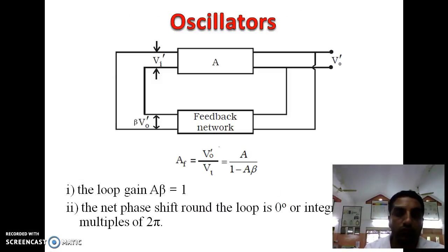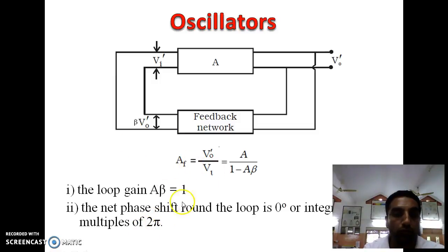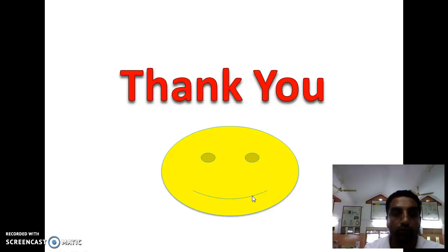Similarly, the transistor is used in different applications like the oscillator. An oscillator converts DC to AC. A transistor feedback amplifier becomes an oscillator only when two conditions are satisfied: the loop gain A×β must equal one, and the total phase shift of the entire loop must equal zero or a multiple of 2π. Thank you very much.